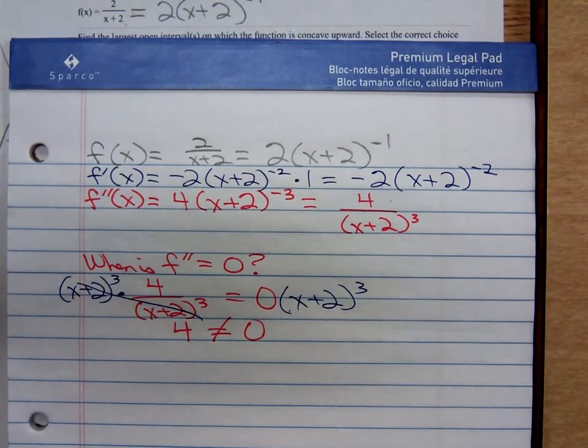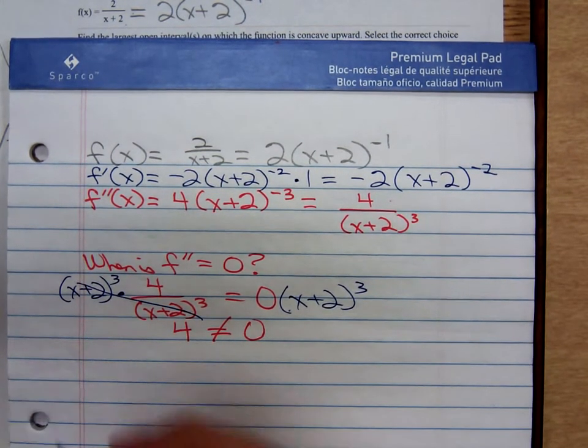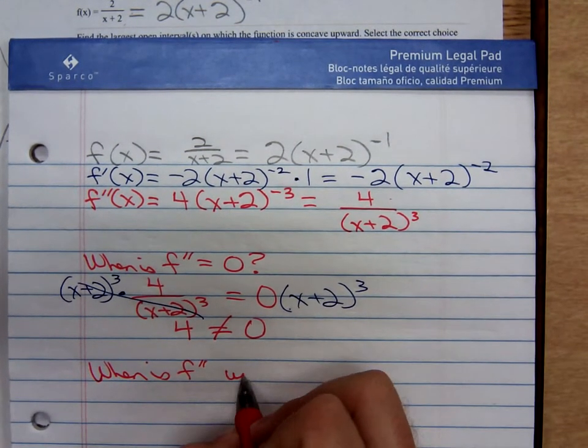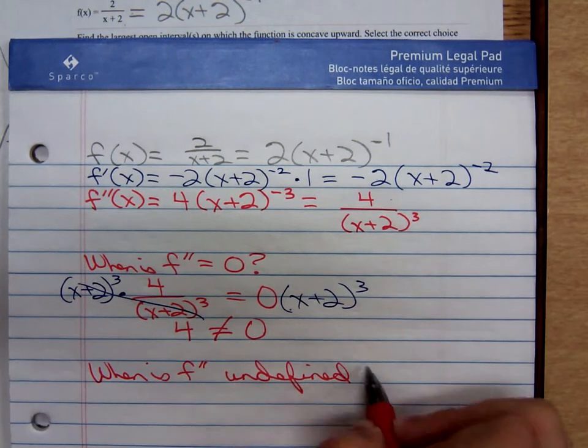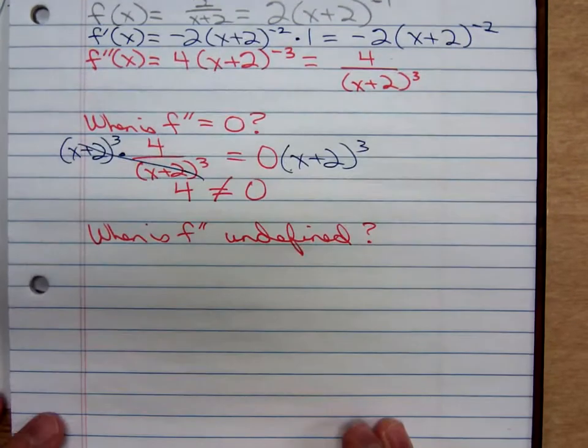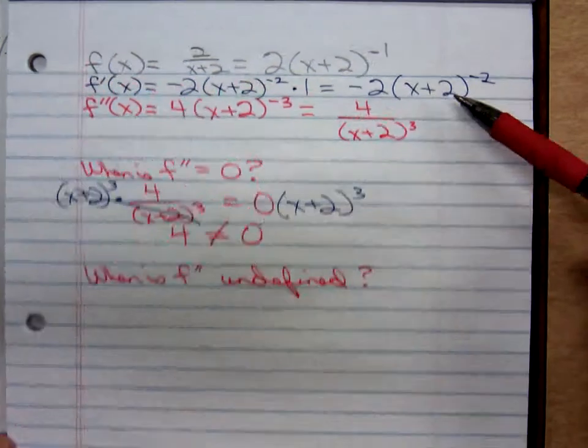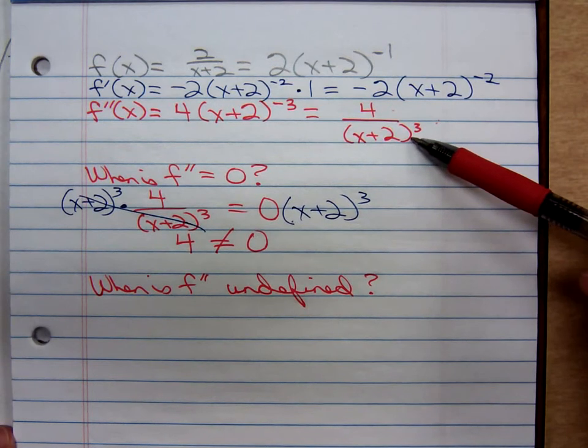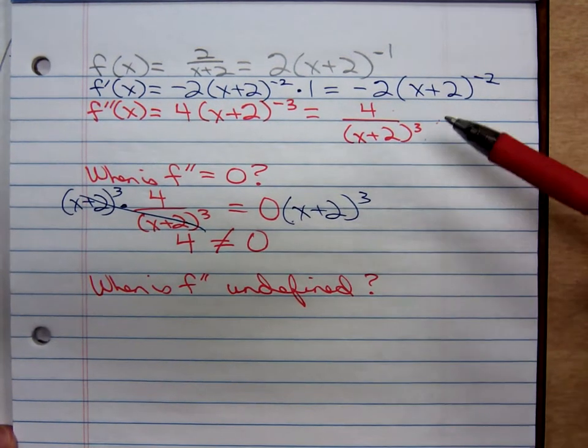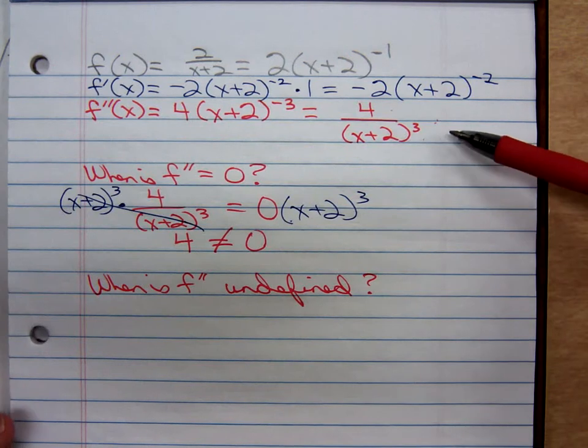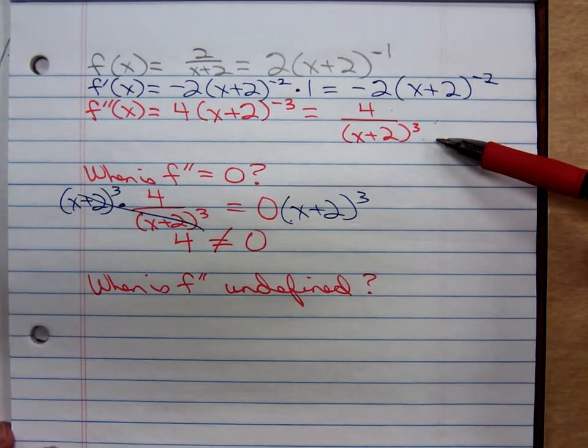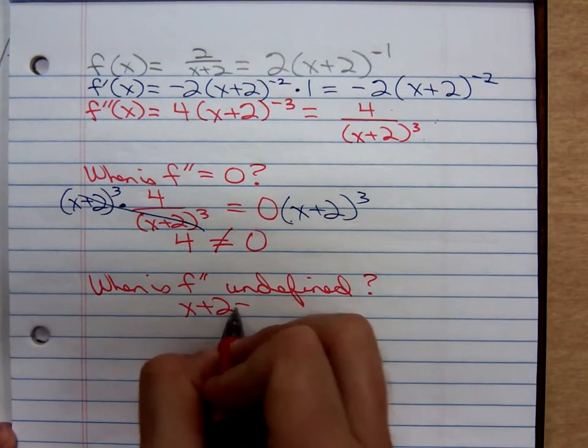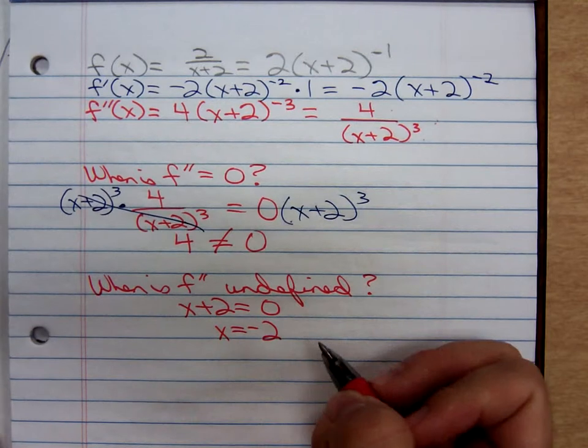So now we ask ourselves, when is f double prime undefined? Well, f double prime is undefined when the denominator is 0. A fraction equals 0 when the numerator is 0. A fraction is undefined when the denominator is 0. So when is that denominator 0? When x plus 2 is 0, when x is equal to negative 2.